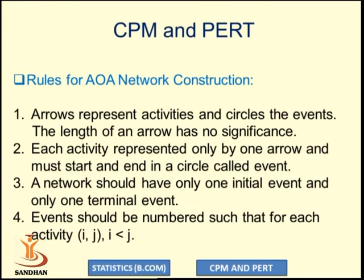Duplication of activity should not occur; it is uniquely identified and uniquely represented in a network diagram. A network should have only one initial event and only one terminal event, so each event is uniquely identified. To give the event number, we use the relationship that for activity IJ, the tail event I should be less than the head event J. We number from left to right and top to bottom.